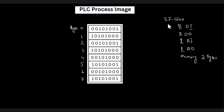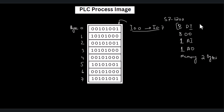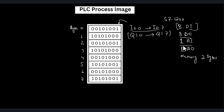Now let's get back to our example. In this typical S7-1200 PLC we have eight digital inputs, so the digital data ranging from I0.0 to I0.7 is stored in the first byte, which is allocated for the digital data of these eight digital inputs. Since we have eight digital outputs, the data ranging from Q1.0 to Q1.7 is allocated for the eight digital outputs.